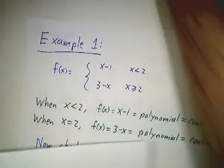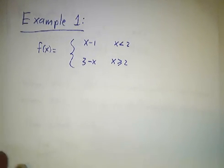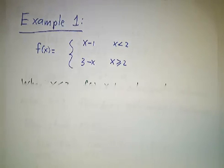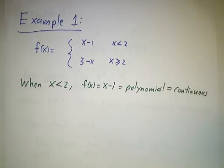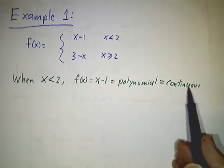So let's look at our first example. x minus 1 for x less than 2, 3 minus x for x bigger equal to 2. Well, when it's less than 2, it's x minus 1, that's a polynomial. Polynomials are continuous, no problem.